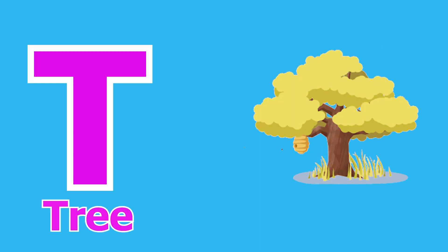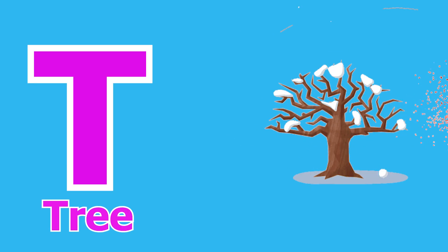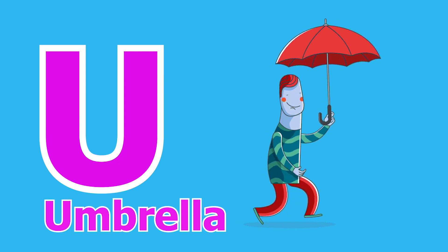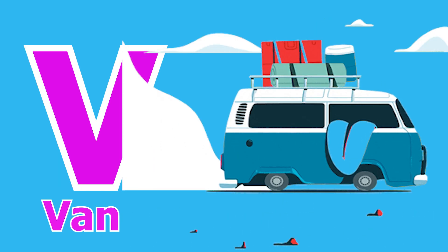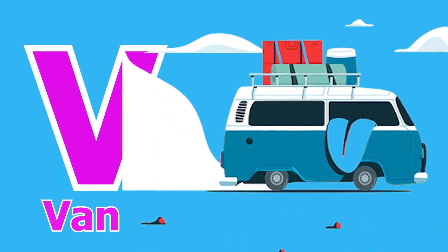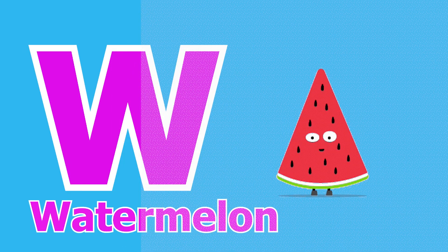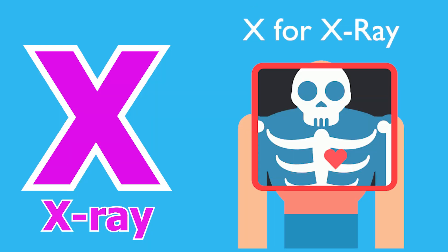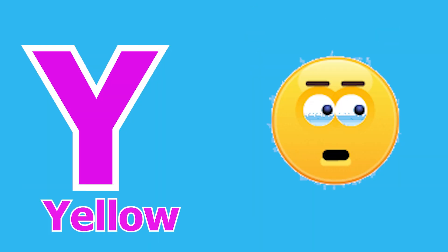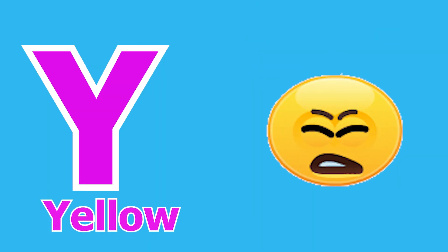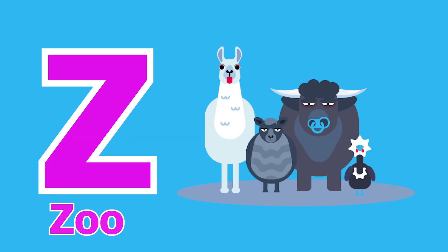S for Sunflower, T for Tree, U for Umbrella, V for Van, W for Watermelon, X for X-Ray, Y for Yellow, Z for Zoo.